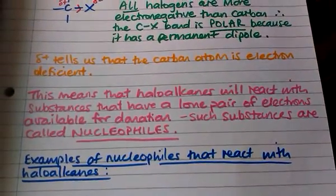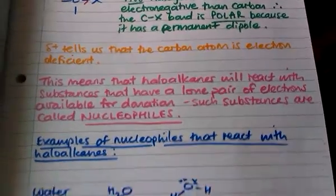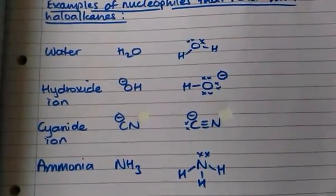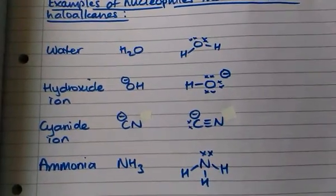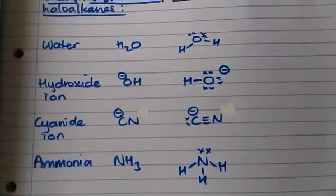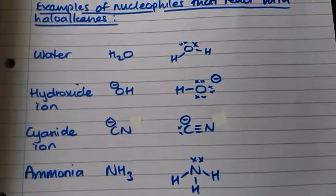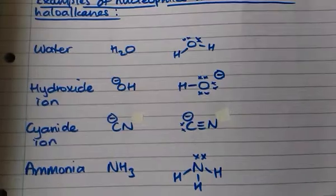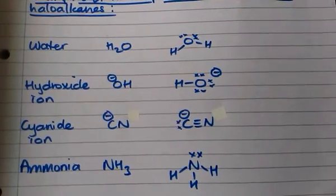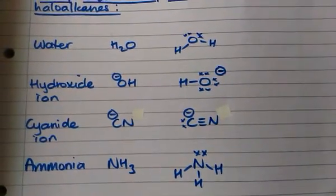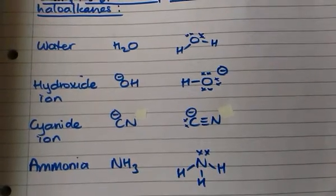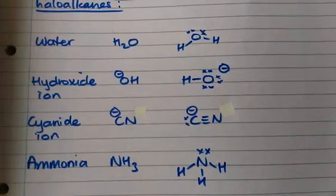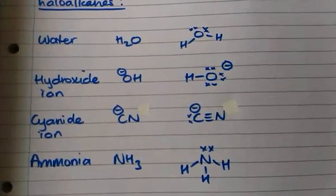These substances are called nucleophiles. So just a few examples of nucleophiles that will react with haloalkanes. First, we've got water, which has got two lone pairs of electrons that can be donated. Secondly, we've got the hydroxide ion, OH-, which has got three lone pairs of electrons available for donation. And then we have the cyanide ion, which has got a lone pair of electrons for donation. And then ammonia, which also has one lone pair of electrons for donation.